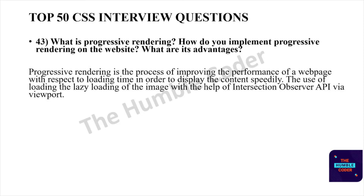What is progressive rendering? How do you implement it, and what are its advantages? Progressive rendering is the process of improving the performance of a web page with respect to loading time in order to display content speedily. One technique is the lazy loading of images with the help of the Intersection Observer API via the viewport.